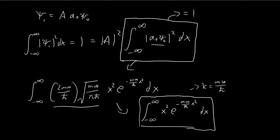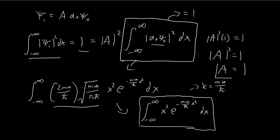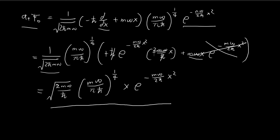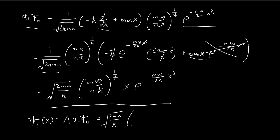We required a² times this integral to equal 1 for normalization. Since the integral equals 1, we get a² = 1, so the normalizing constant a = 1. In a way we've somewhat wasted our efforts, but we've confirmed a = 1. Therefore ξ₁ equals the normalizing constant times a+ξ₀, and since a = 1, ξ₁ is simply the expression we found for a+ξ₀. This is our result, and the same method can be used to find all other stationary states.